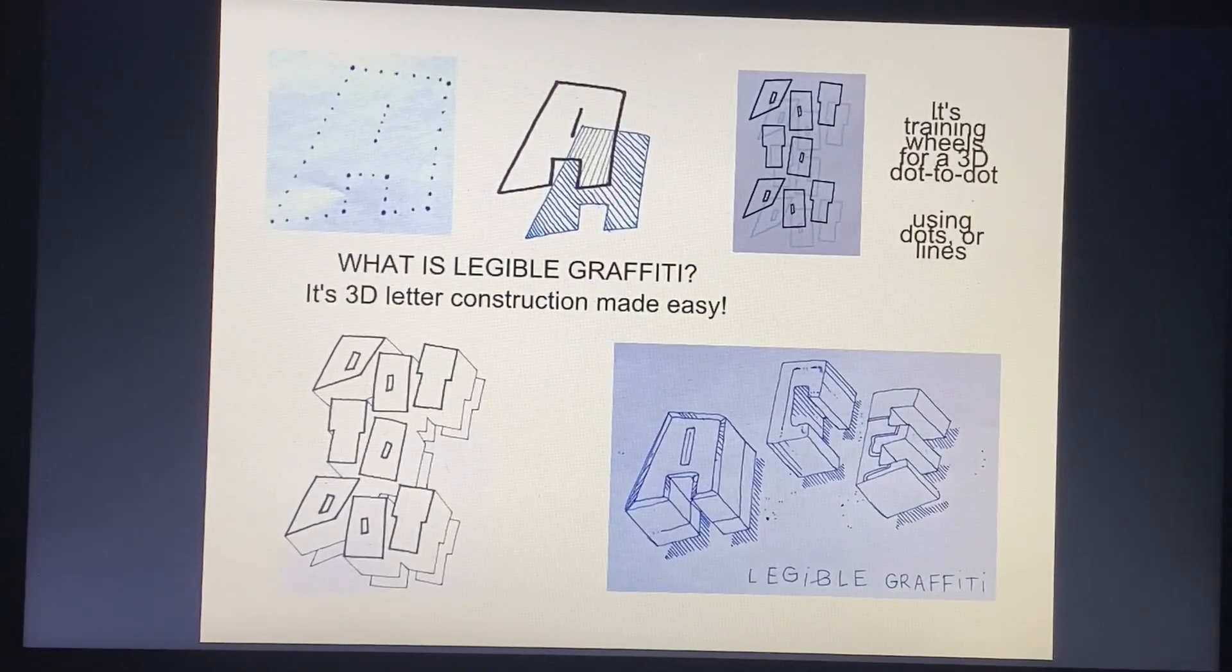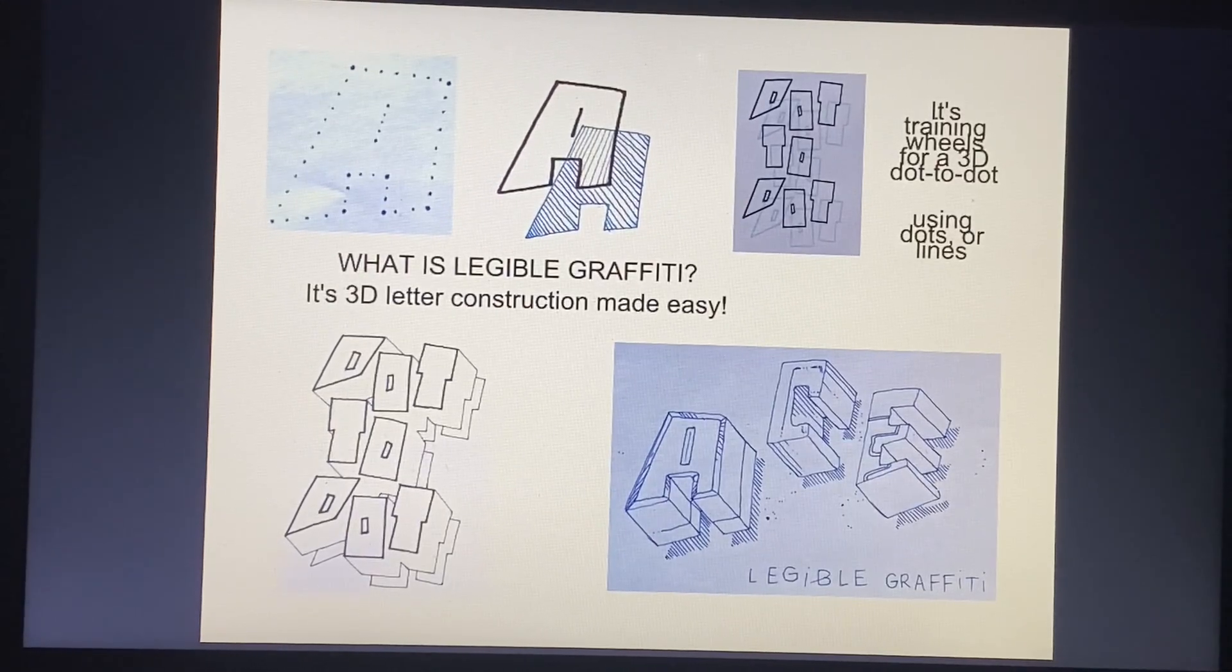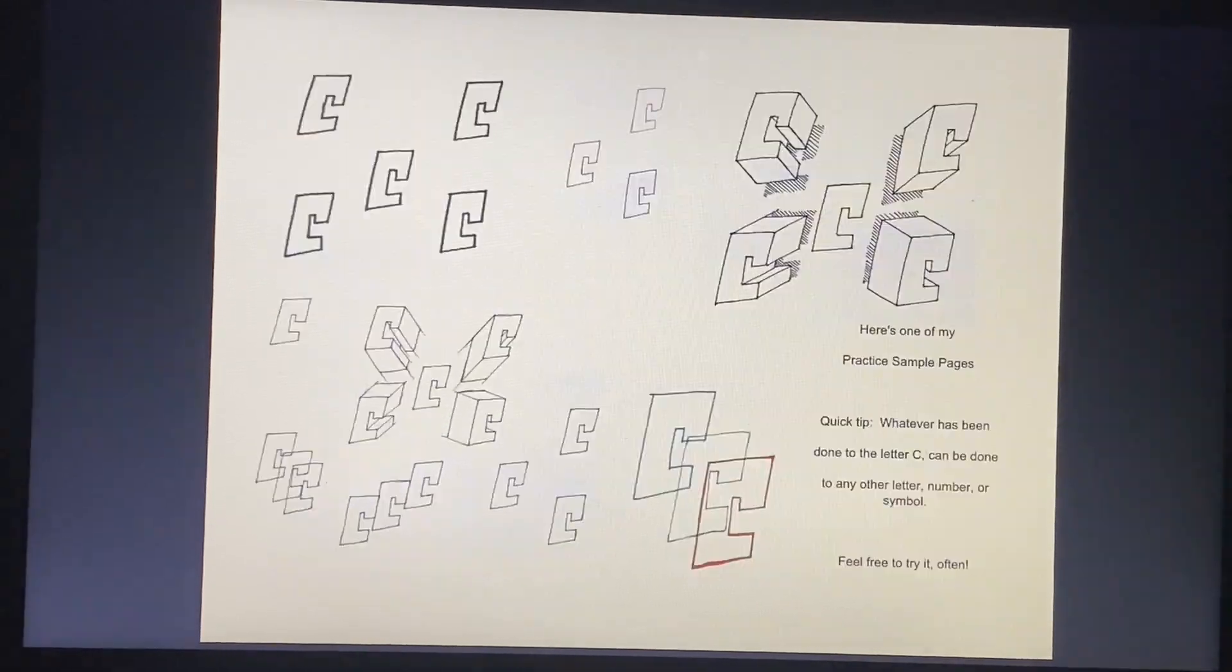To me, legible graffiti is 3D letter construction made easy. It's like a three-dimensional dot-to-dot by using a light source, which is pretty much the training wheels for doing a dot-to-dot. It's going to be fun.